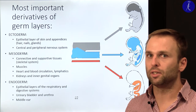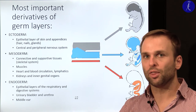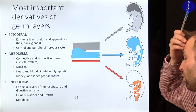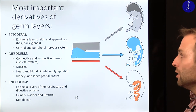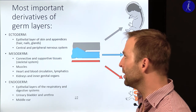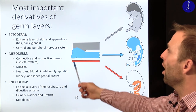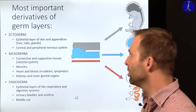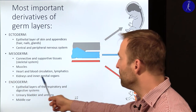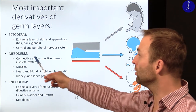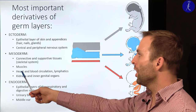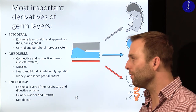Next step is organogenesis — weeks four to eight. During organogenesis you take the three germ disc layers and develop the organ systems. The ectoderm produces the epithelial layer of the skin and its appendices like hair, fingernails and glands. A second part of the ectoderm develops into the nervous system — both the central and peripheral nervous system are ectodermal in origin. The mesoderm produces connective and supportive tissues for the skeletal system, muscles, the heart and blood circulation, and also lymphatic vessels and lymph nodes.